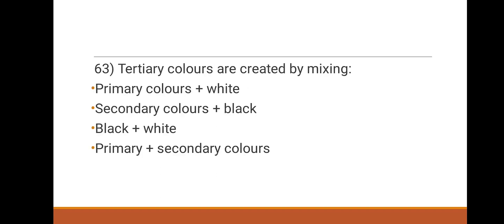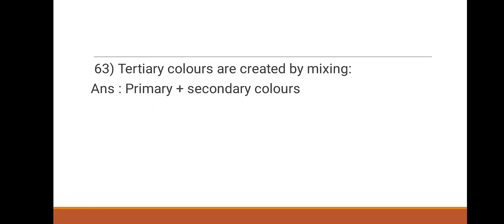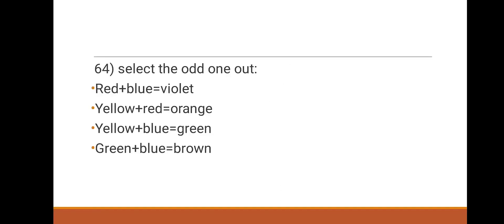The correct answer is green, orange, purple — these are the secondary colors. Next question: tertiary colors are created by mixing — options are: primary color plus white, secondary colors plus black, black plus white, or primary plus secondary colors. The answer is primary plus secondary colors.